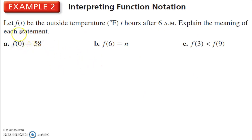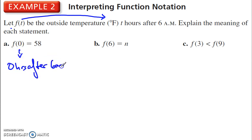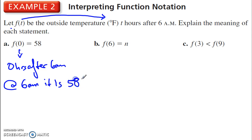We want to interpret this in function notation. So f of t is the outside temperature in Fahrenheit, t hours after 6 a.m., so t represents the hours after 6. The meaning of f of 0 equals 58: f of 0 means 0 hours after 6 a.m. — that is at 6 a.m. — so it is 58 degrees Fahrenheit.